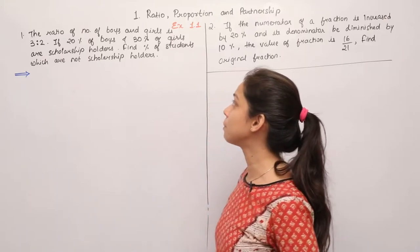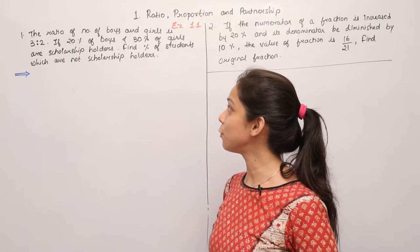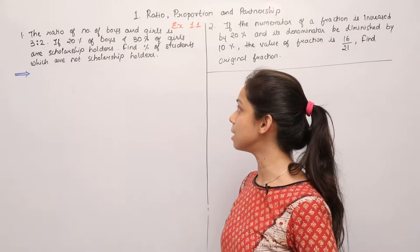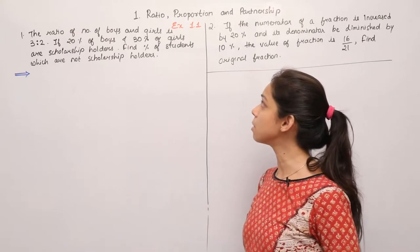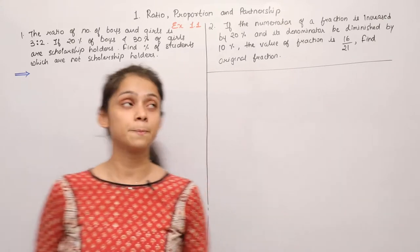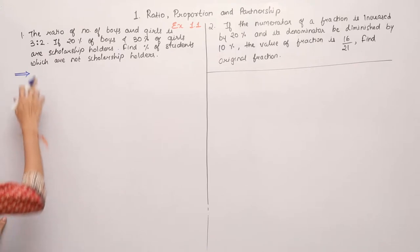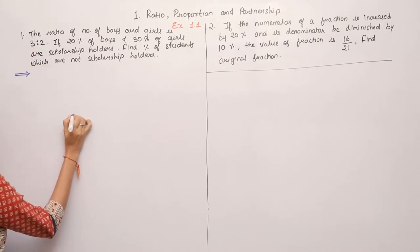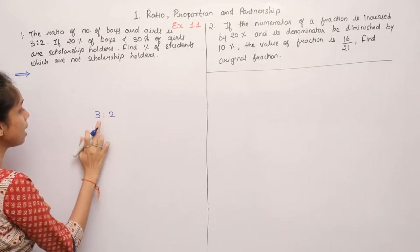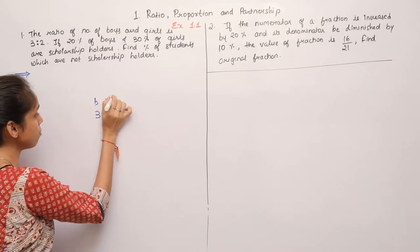The ratio of number of boys and girls is 3 to 2. If 20% of boys and 30% of girls are scholarship holders, find the percent of students which are not scholarship holders. Here we have the ratio of boys to girls as 3 to 2.